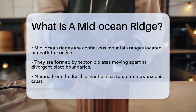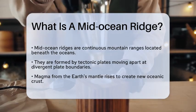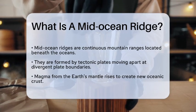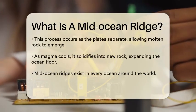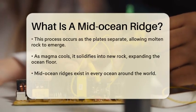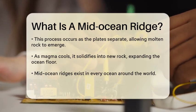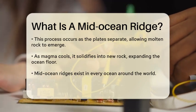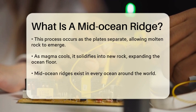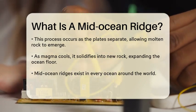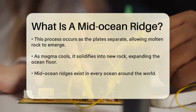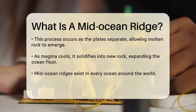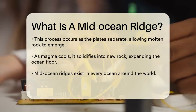A mid-ocean ridge is a continuous mountain range that runs through the world's oceans. It is formed by tectonic plates that are moving apart, allowing magma from the Earth's mantle to rise and create new oceanic crust. This process occurs at divergent plate boundaries, where the plates separate and create space for molten rock to emerge.